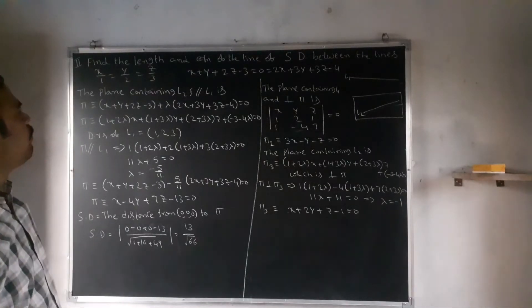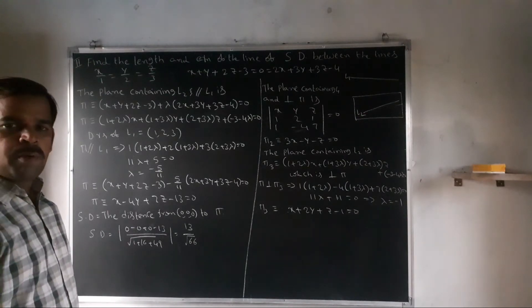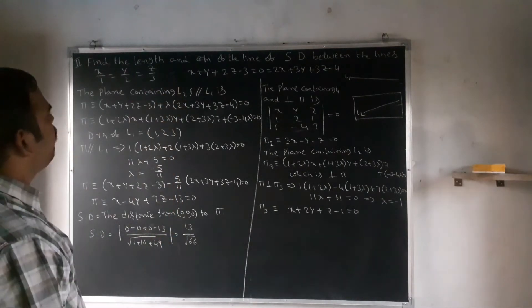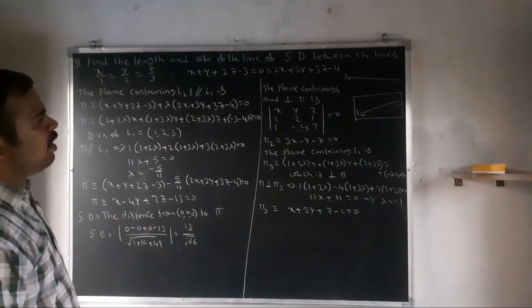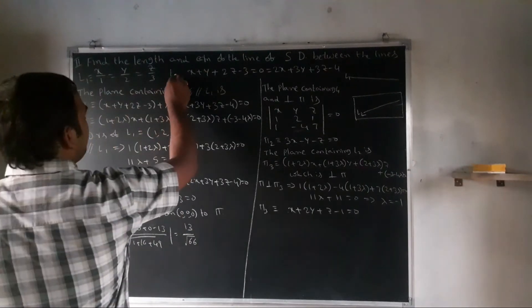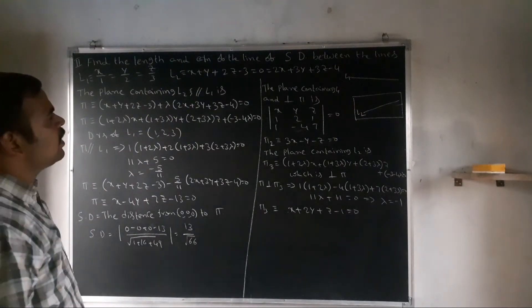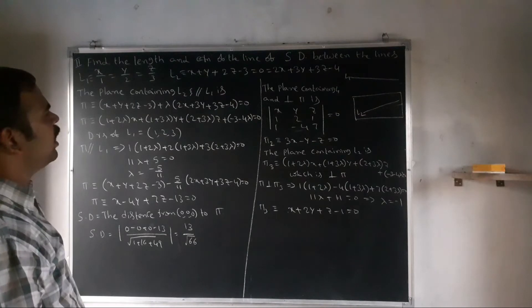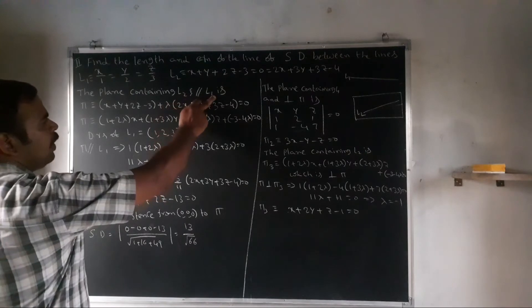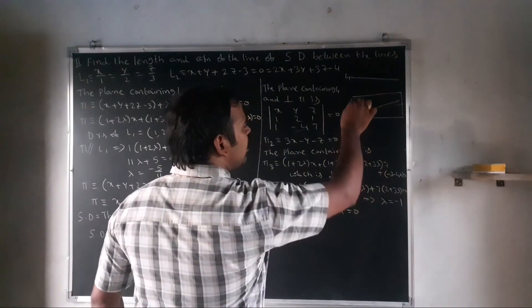Another problem using Method 2: here the first line is in symmetric form and the second is in unsymmetric form. Find the length and equation of the line of shortest distance between lines L1 and L2. The plane containing L2 and parallel to L1.